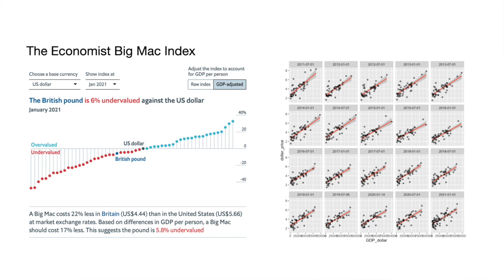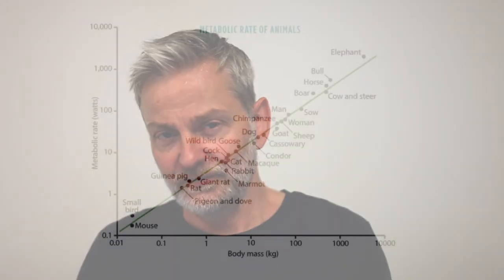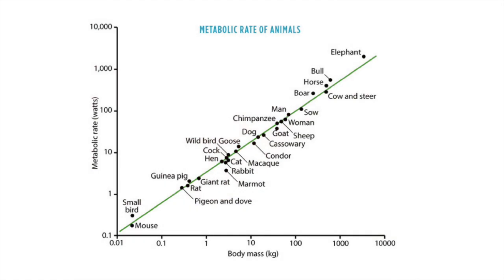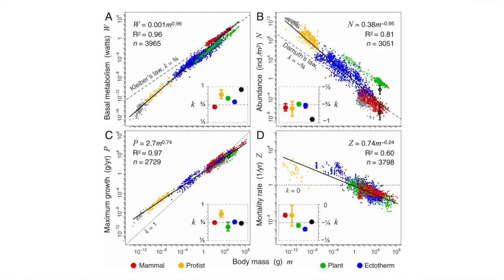Linear models also crop up frequently in finance and economics. In this example of the Economist's Big Mac index, linear models are used behind the scenes to do the adjustment for GDP from one country to another.